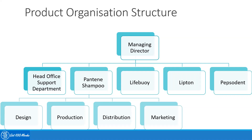This kind of structure makes sense because many times products are very different from each other. There are hardly any similarities between Lipton and Pantene shampoo — the consumer needs are different, the product manufacturing is different, and there are a lot of differences in terms of how you approach sales and marketing. So sometimes it makes sense for businesses to structure themselves from a product perspective.